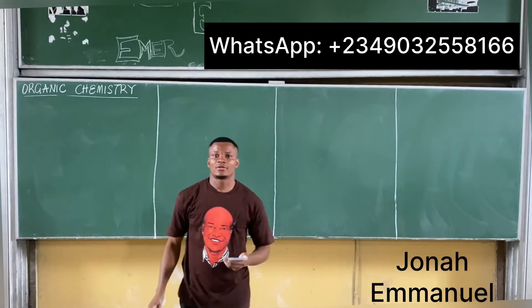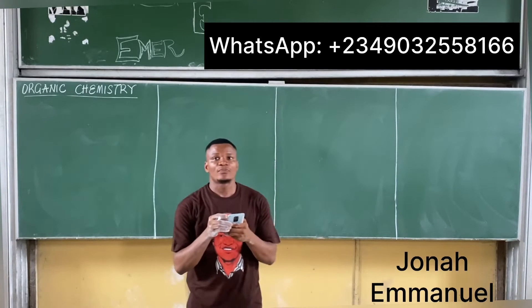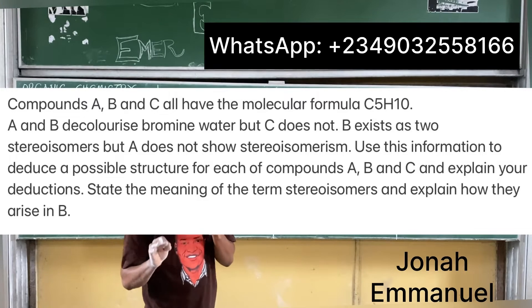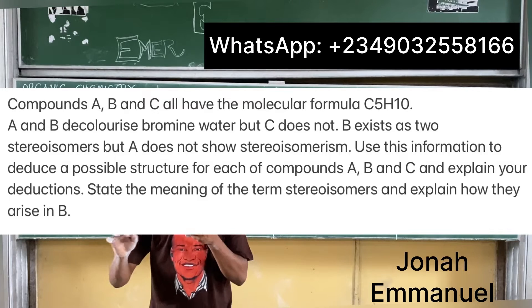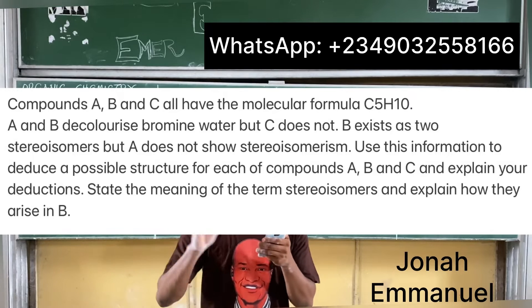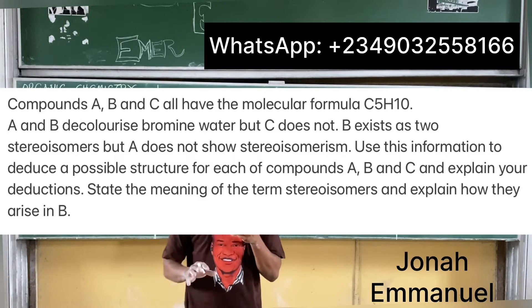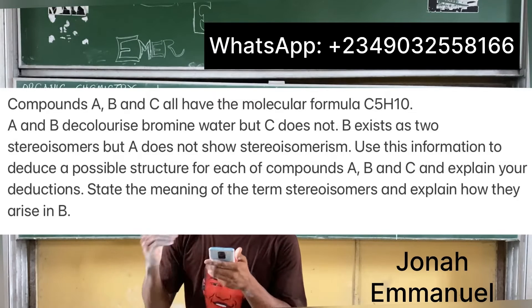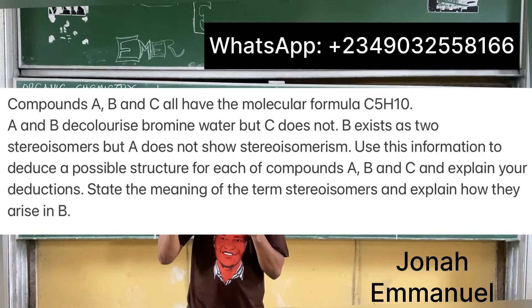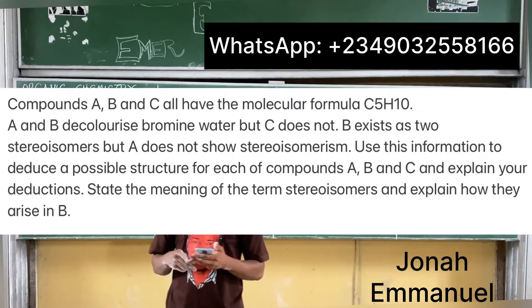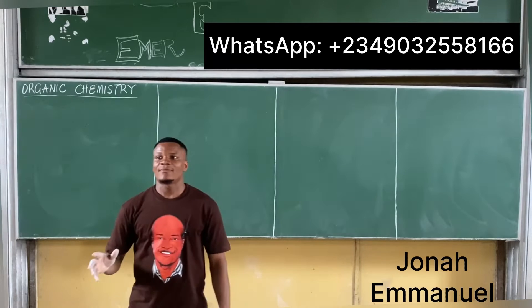For recording purposes, let's check this question. Compounds A, B, and C all have the molecular formula C5H10. A and B decolorize bromine water but C does not. B exists as two stereo isomers but A does not show stereoisomerism. Use this information to deduce a possible structure for each compound, explain your deduction, state the meaning of stereoisomerism, and explain how it arises in compound B.